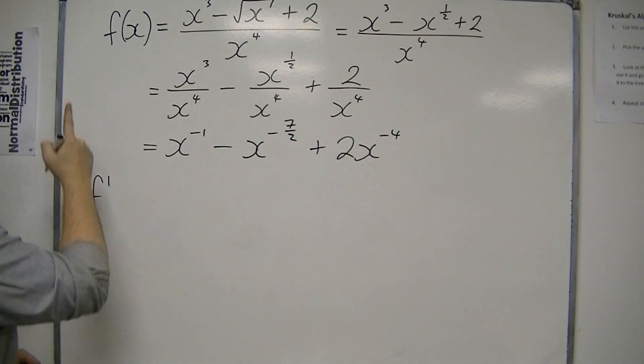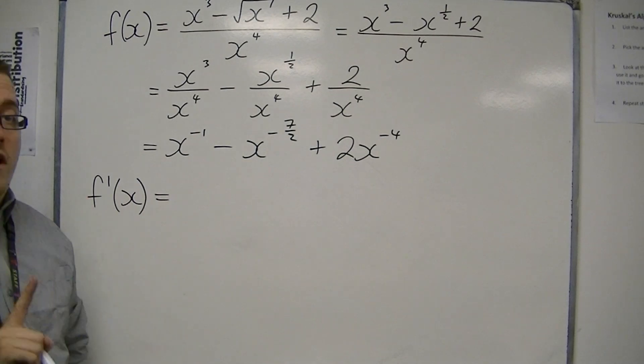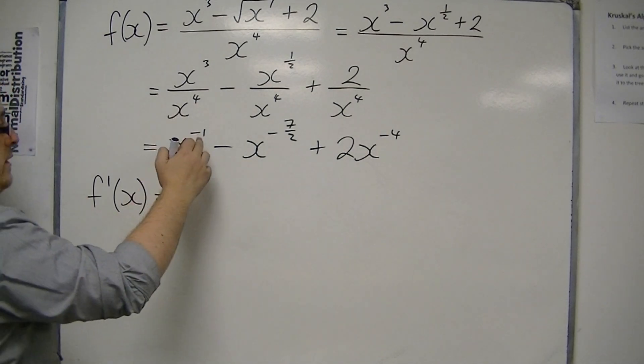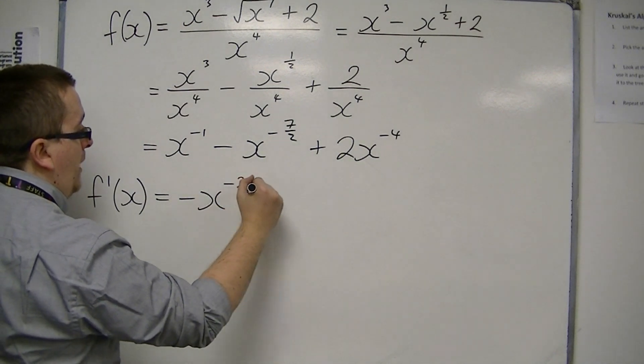And remember, with function notation, the first derivative is represented with f prime. So now the power can come down to the front. We have minus x take 1 off the power.